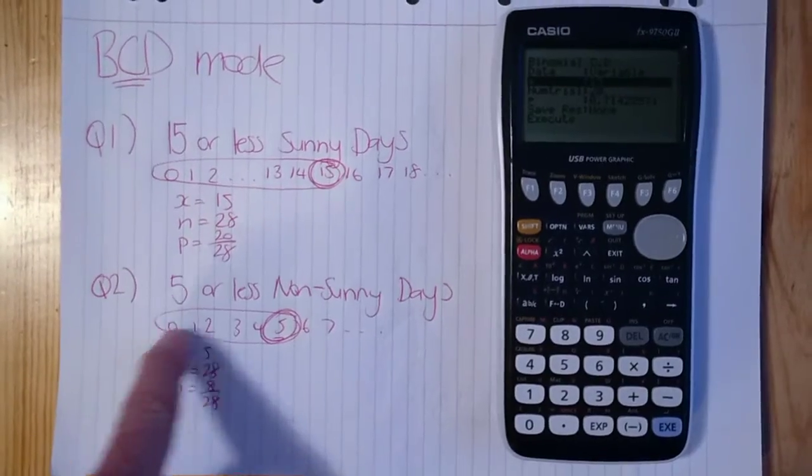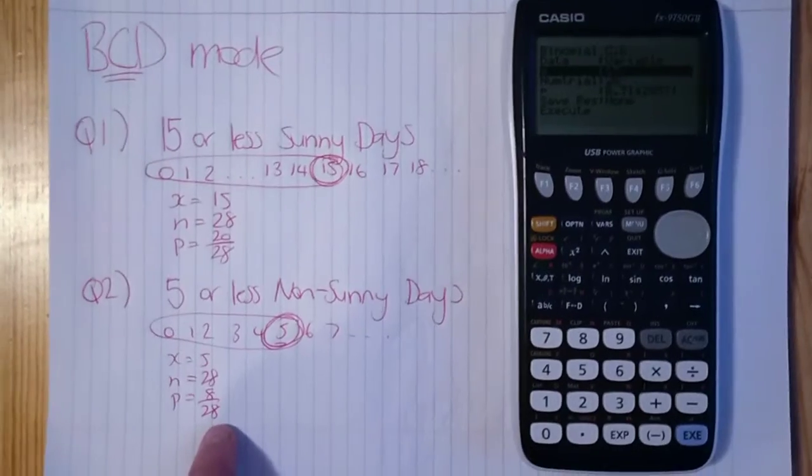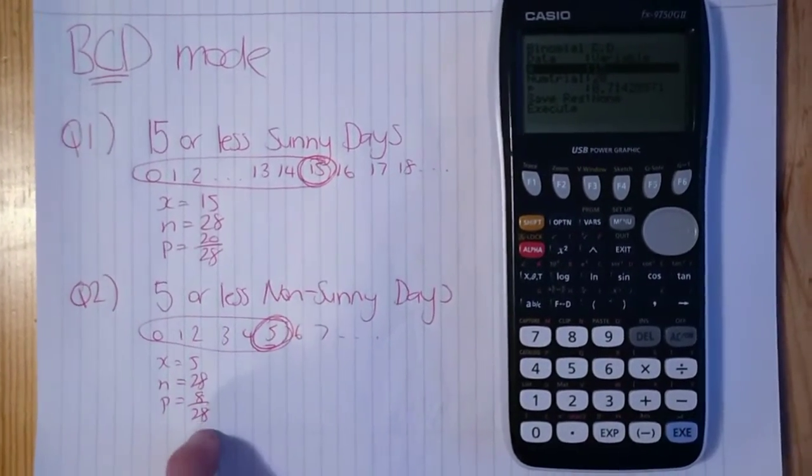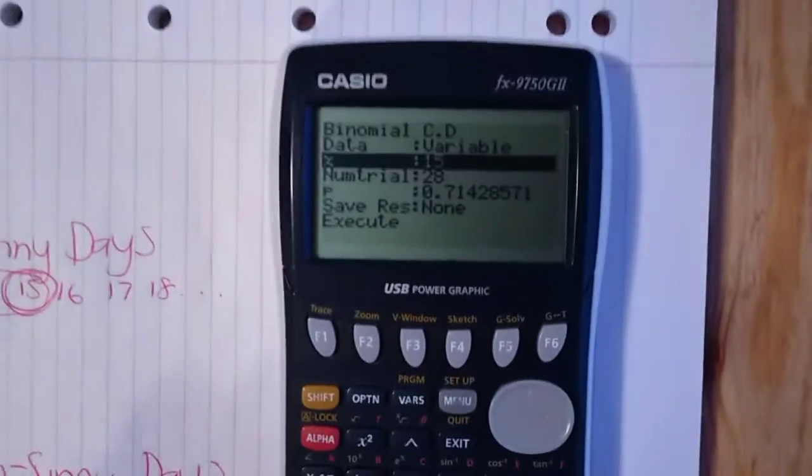And then the highest value of that is five. And that means our x value is five. The number of trials is still 28 because there are 28 days in February, but this time the probability is 8 over 28. So let's get into our graphics calculator.